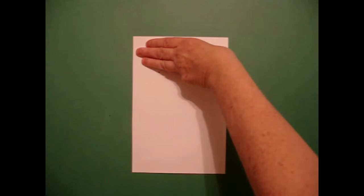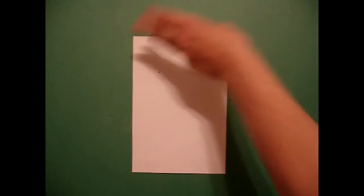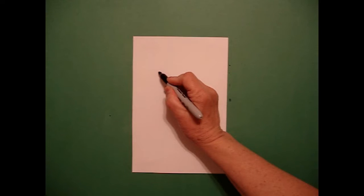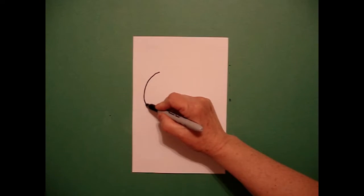So I take my three fingers on the left side and put a dot. And from the dot, I'm going to draw an oval.